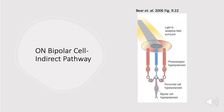Now for the indirect pathway — here we don't have light in the center; it's dark in the center but light in the surround. If we have light hitting the surround, our surrounding photoreceptors get hyperpolarized, as we expect, since photoreceptors are normally depolarized in the dark. Because they're hyperpolarized, they're going to release less glutamate.